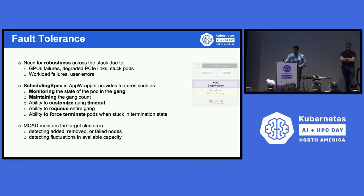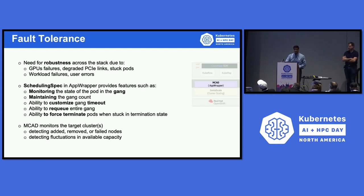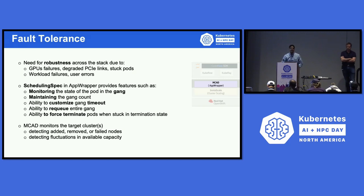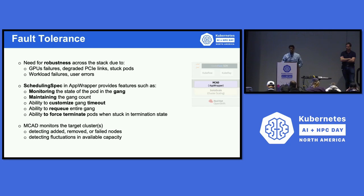Fault tolerance is needed for various reasons. GPUs fail very often at scale. There are degraded PCI links, which slow down the entire training at scale. Stuck pods due to VM or node failures also happen. And there are always user errors that happen at scale. The scheduling spec stanza in AppWrapper provides the capability to monitor and maintain the state of the gang, and also customize timeouts for submitted gangs. When these features are enabled, MCAD can re-queue a gang automatically during failures with the ability to force-terminate stuck pods. MCAD can detect nodes that are added, removed, or failed by nannying gangs of pods.